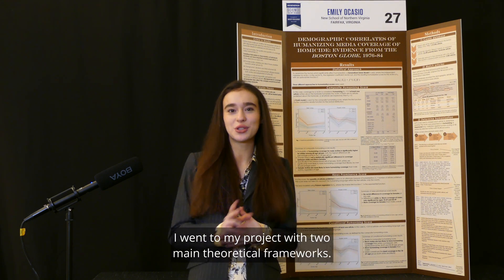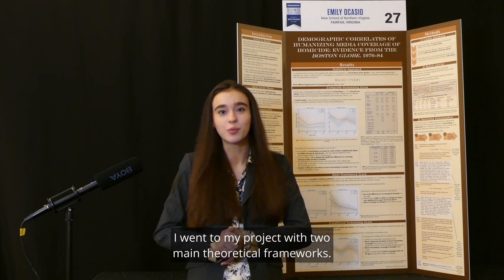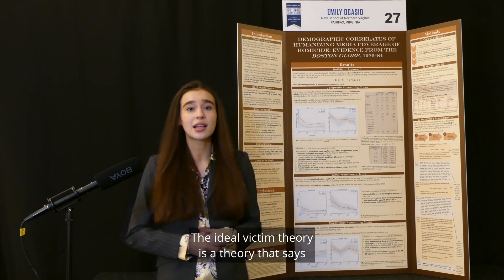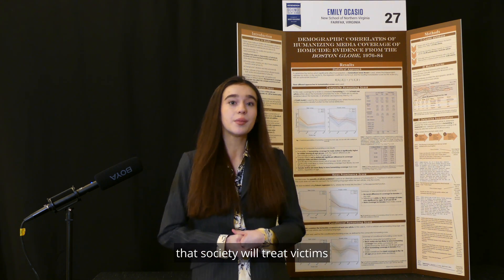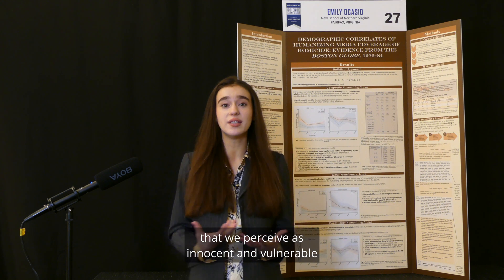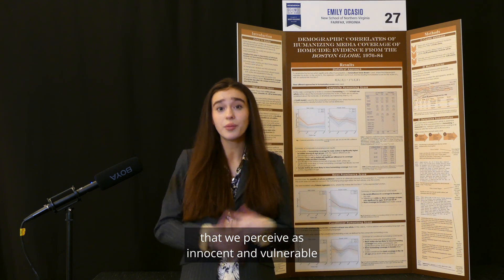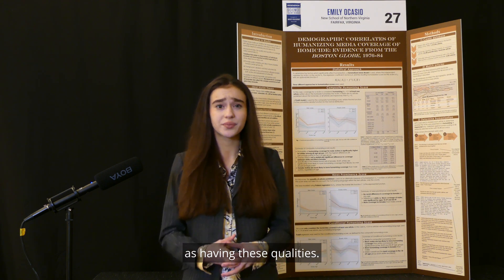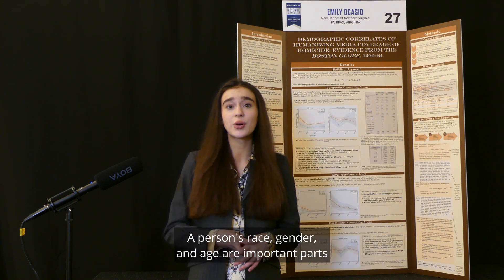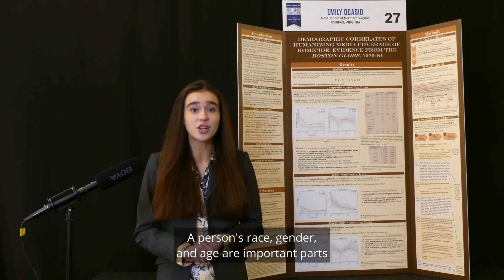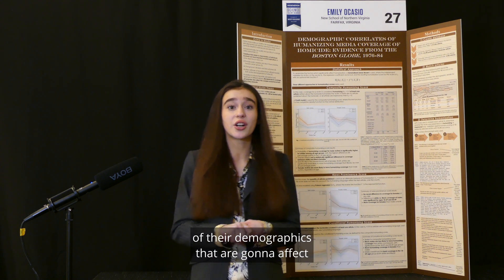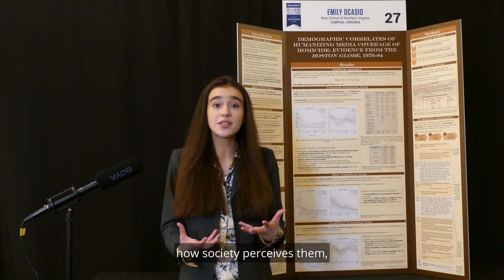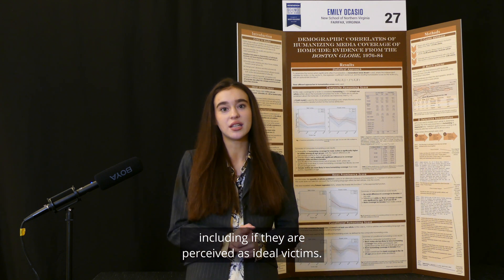I went into my project with two main theoretical frameworks. The first one is the ideal victim theory. The ideal victim theory says that society will treat victims that we perceive as innocent and vulnerable better than victims that we don't perceive as having these qualities. A person's race, gender, and age are important parts of their demographics that affect how society perceives them, including if they are perceived as ideal victims.